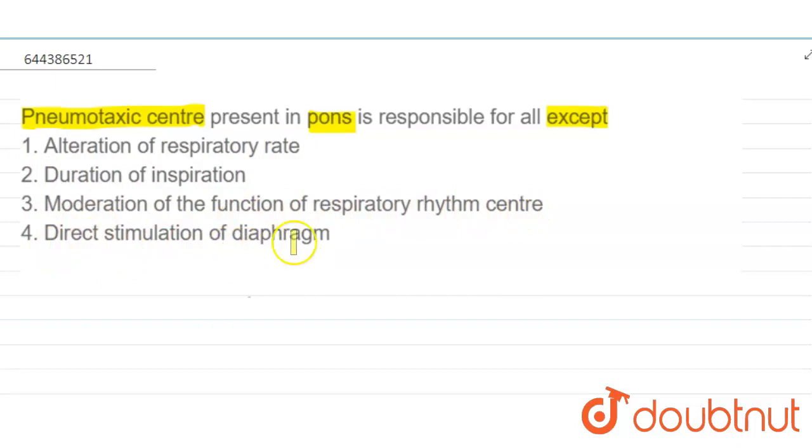So first we discuss about brain, and then we discuss about the pneumotoxic center. So let's start. This is brain, and brain is divided into three parts: first, forebrain; midbrain; and hindbrain.